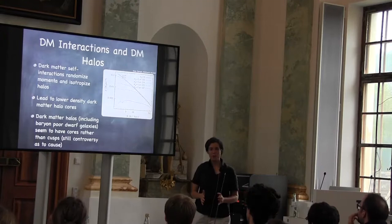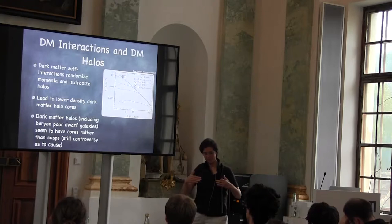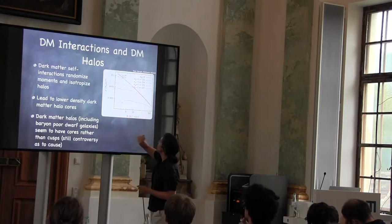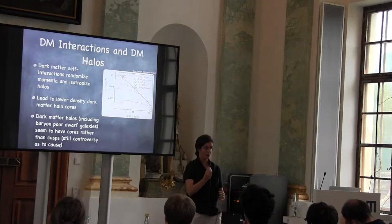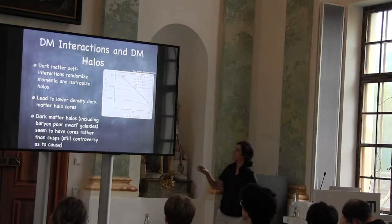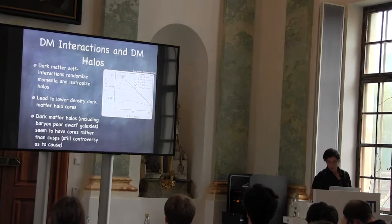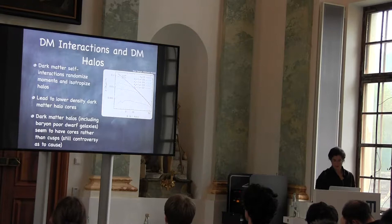If you wait even longer, you'd get something called a gravothermal collapse catastrophe, where you form a core that's even denser towards the center. The general feature at late time is that at moderate radii you puff the halo out, and at the very center you produce a dark matter spike. If you're able to observe the density profile in galaxies, you can put a constraint on the dark matter self-interaction cross-section, because what we see is relatively consistent with non-interacting dark matter — although the constraints are still rather controversial and not very well fixed.